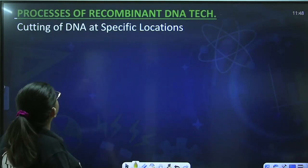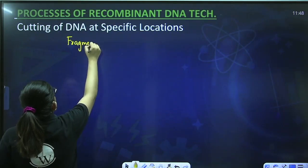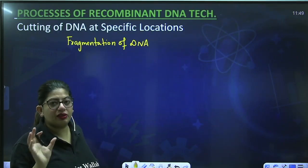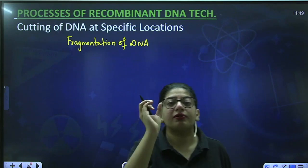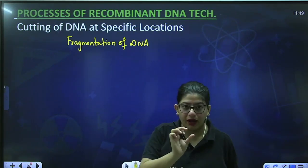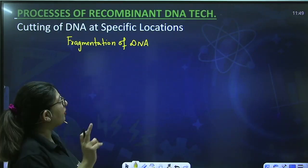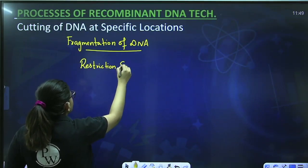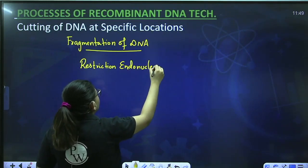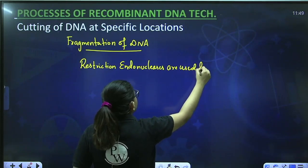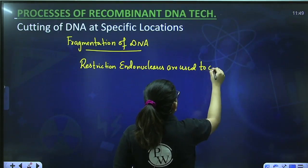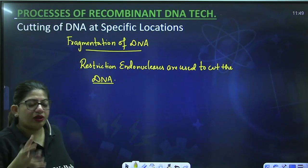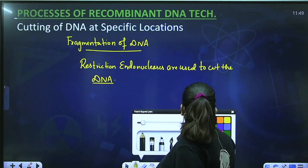This leads to the next step: cutting of DNA at specific locations, also known as fragmentation of DNA. The DNA we have taken out is the complete DNA of the animal or human. To cut it and get the particular piece required, we treat it with restriction enzymes. Restriction endonucleases are used to cut the DNA, and as a result, a number of pieces of DNA are formed.